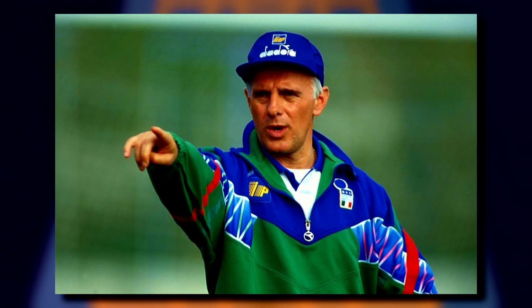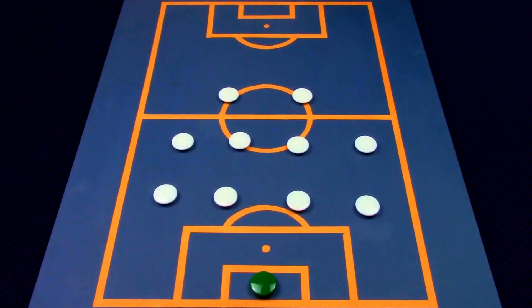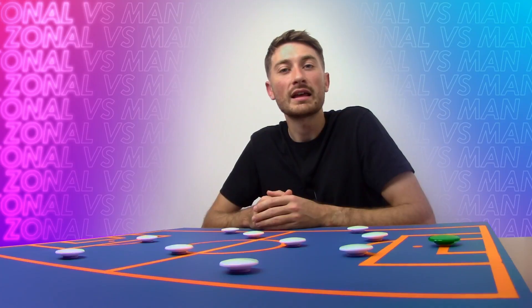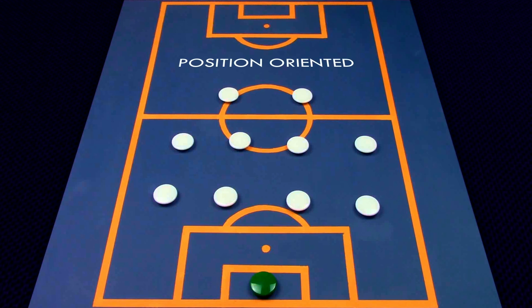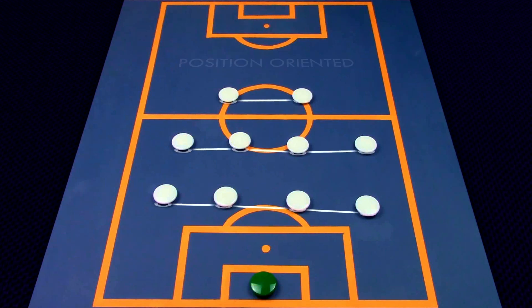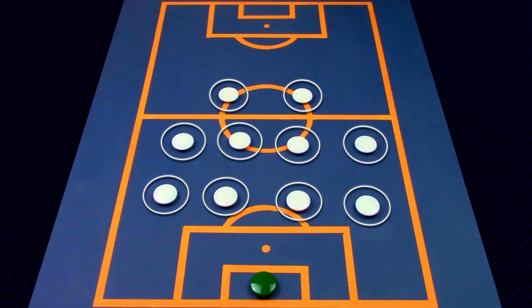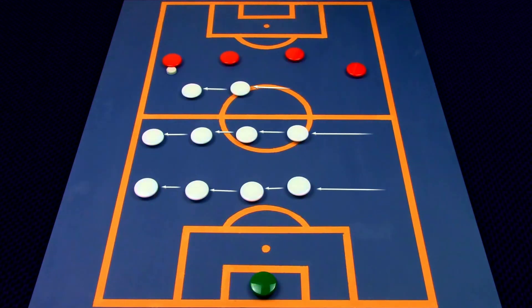It was with Arrigo Sacchi that zonal marking truly took the spotlight. Within his team, the players had four reference points: the ball, the space, the opponent, and their teammates. These four concepts completely revolutionised the game, with all top teams slowly adopting at least one of these principles within their defensive tactics. The first type is position-oriented zonal marking, where the player's reference point is their teammates. The team simply operates in its desired formation, with clearly defined positions, and each player covers their own position, moving as a block with teammates.